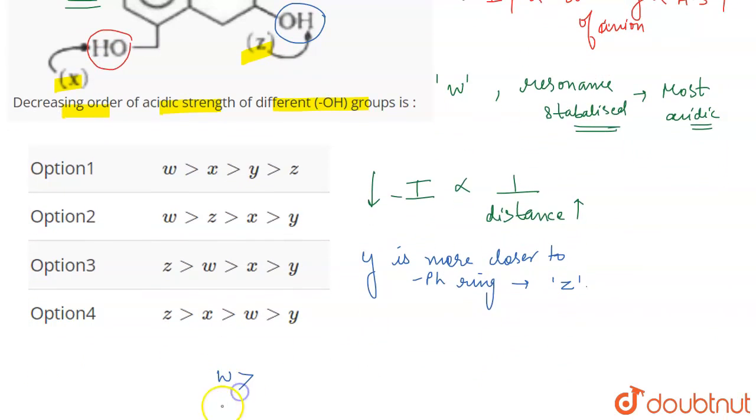So what do we understand from here? That W is going to be the most acidic because it is resonance stabilized. Then we are going to have X, because there's a minus I effect of the phenyl ring that is taking place here. Out of Y and Z, as Y is more closer to the phenyl ring, it is going to experience more minus I effect in comparison to Z. Therefore, Z is going to be the least acidic of all.